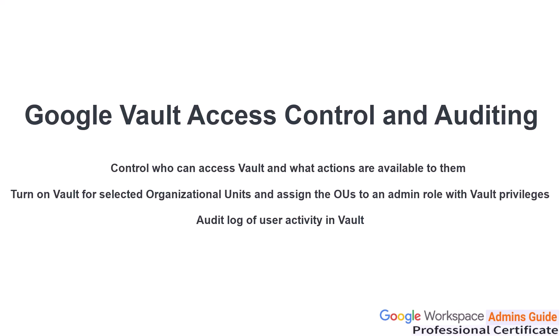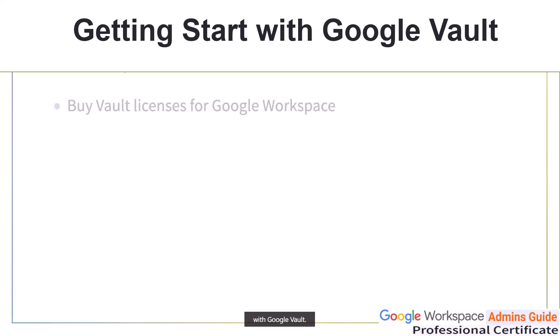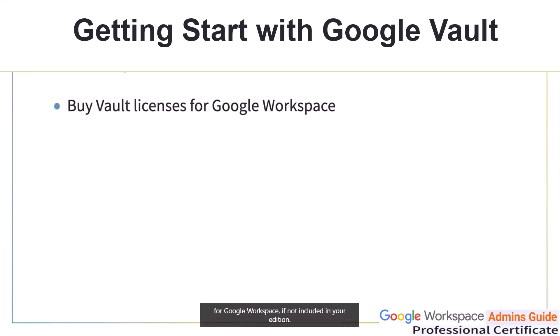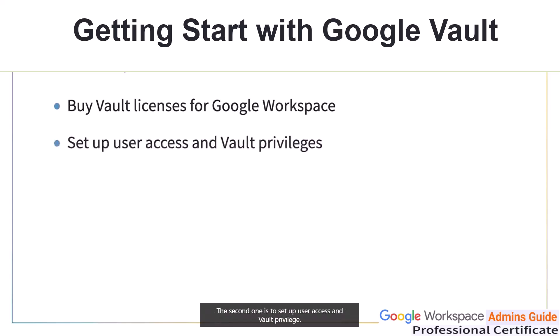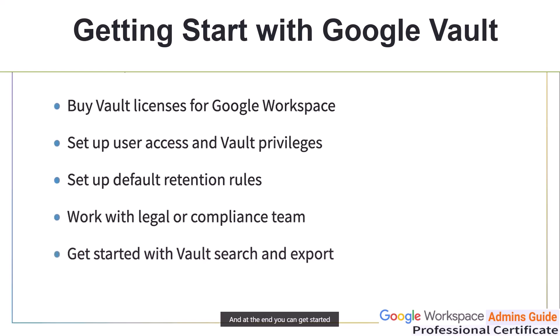Let's summarize the steps to get started with Google Vault. First, purchase Vault licenses for Google Workspace if not included in your edition. Second, set up user access and Vault privileges. Then set up default or custom retention rules, working with your legal or compliance team to determine the most appropriate. Finally, you can get started with Google search and export.